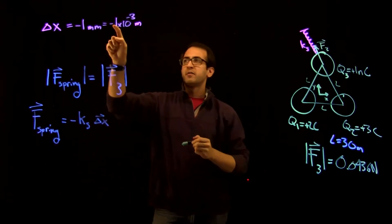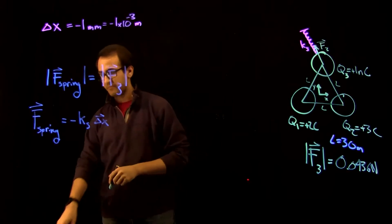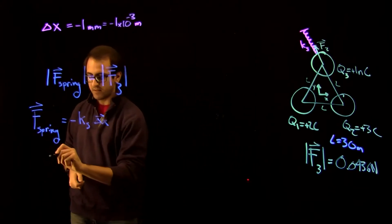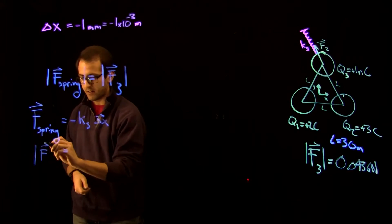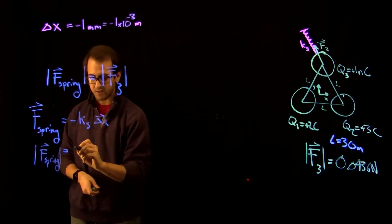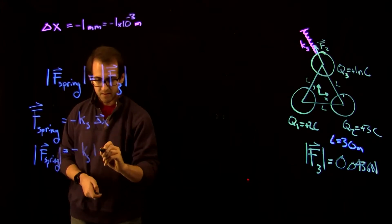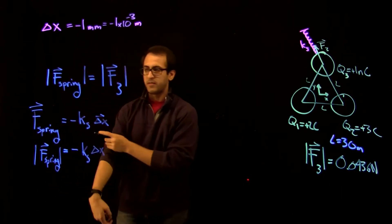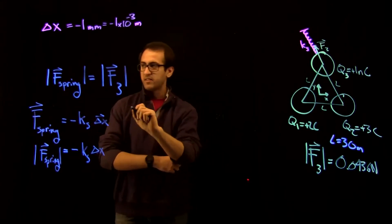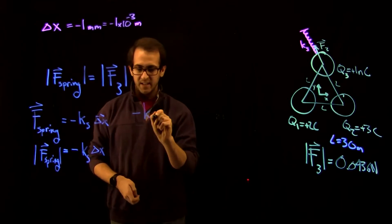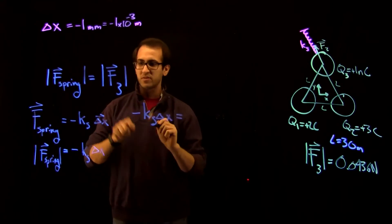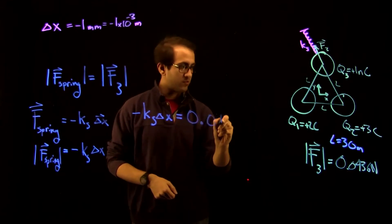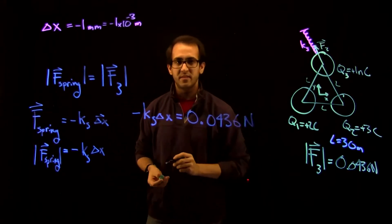The spring force is given by F spring equal to minus Ks delta X. It's called delta X vector because it's minus one, it's going minus one meter. So we know this. So the magnitude of F spring is just going to be minus Ks delta X. And because we have this force balancing equation, we can rewrite that here. So let's write minus Ks delta X equals F3. We already know the magnitude of F3 down here. So that's equal to 0.0436 newtons.